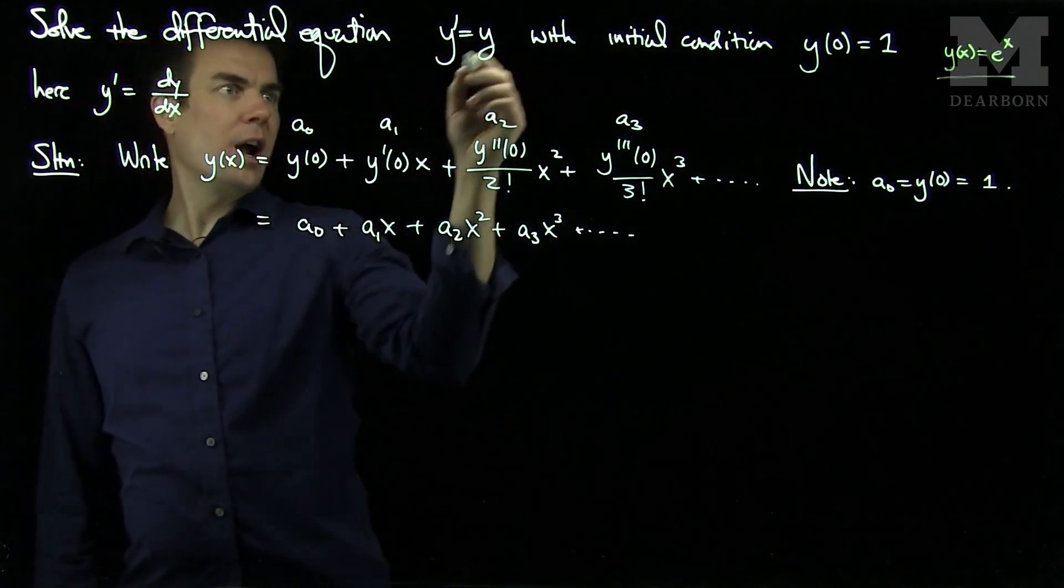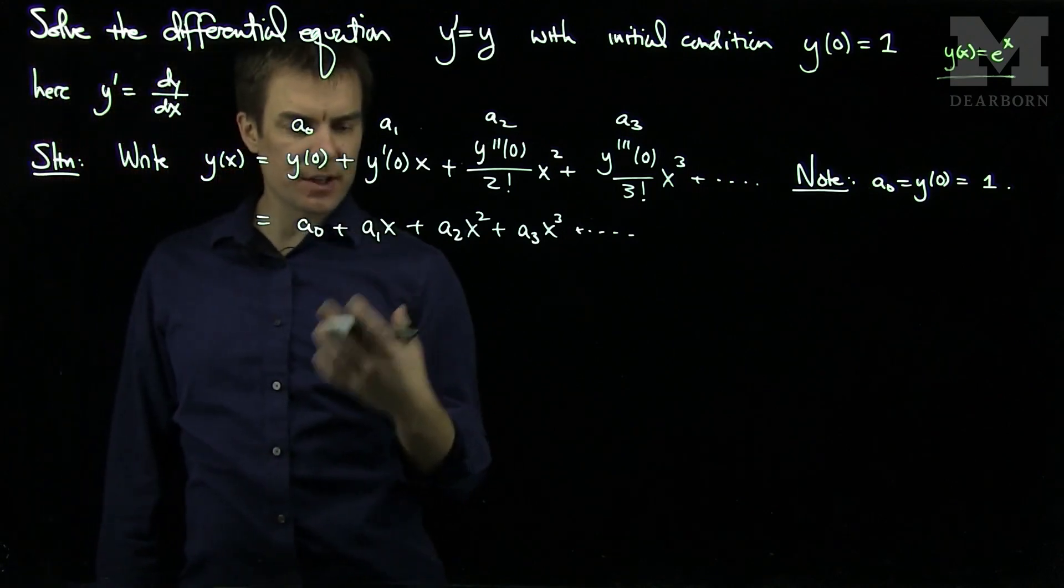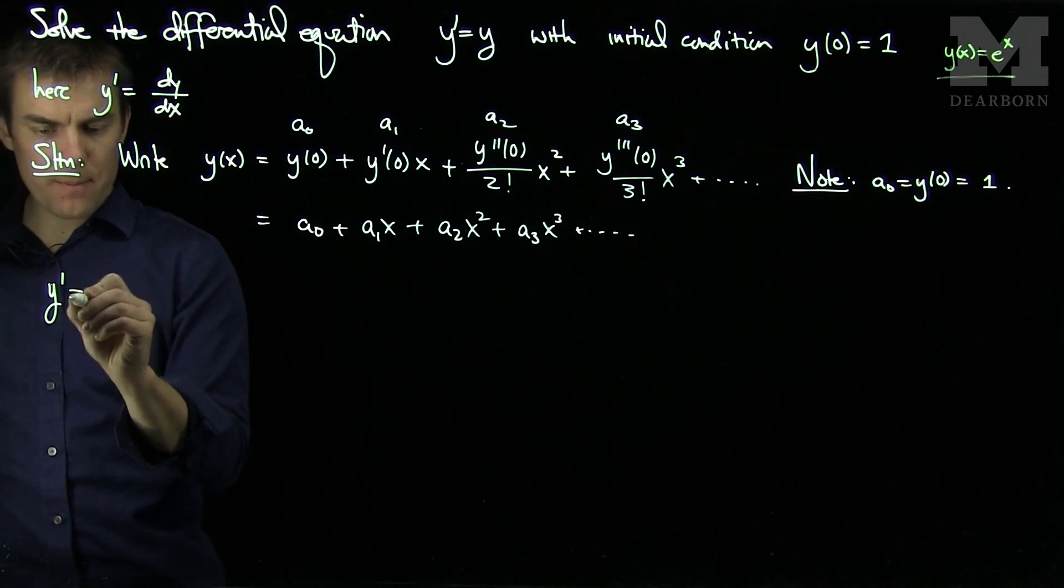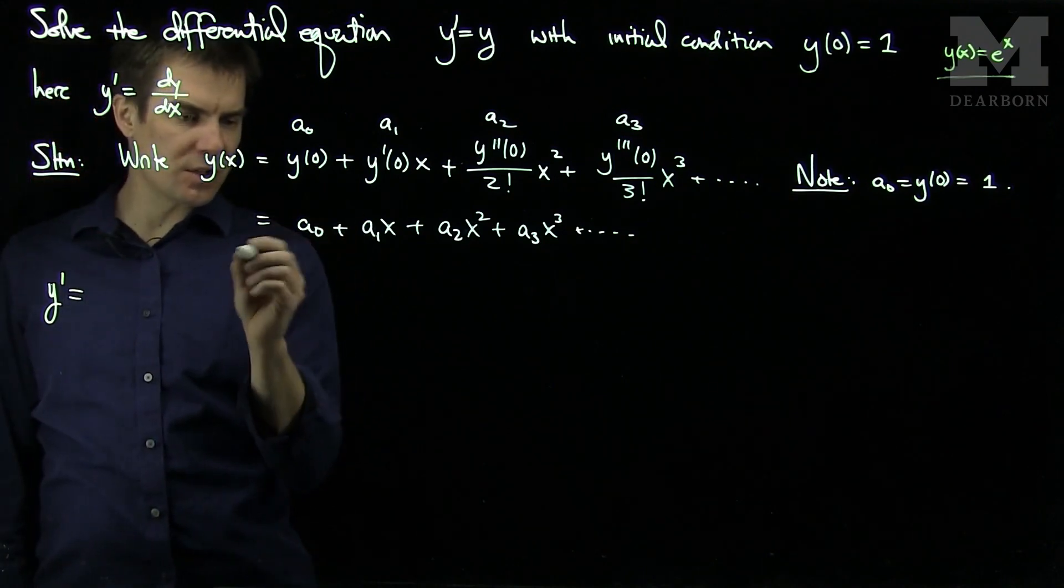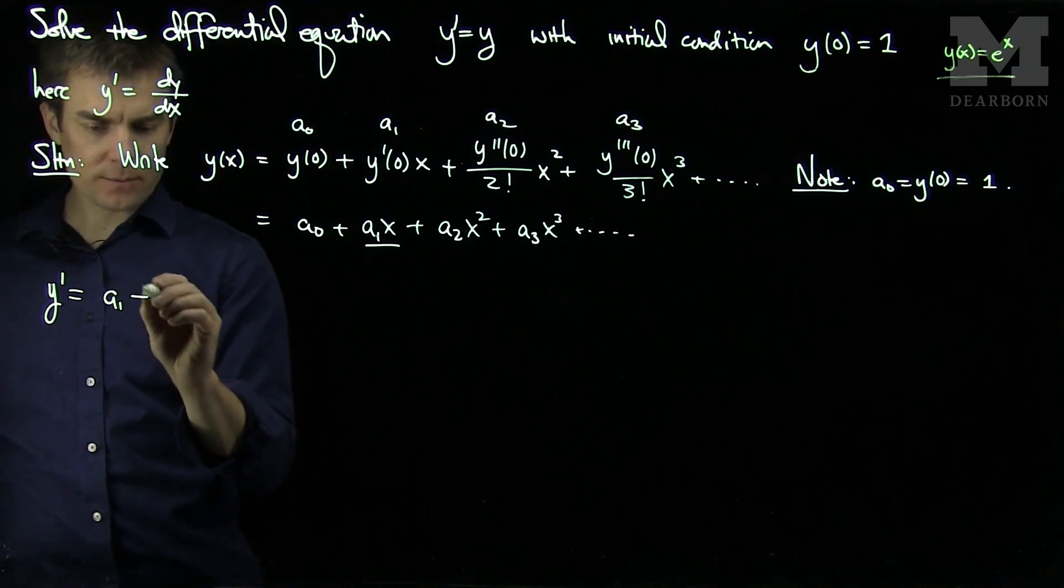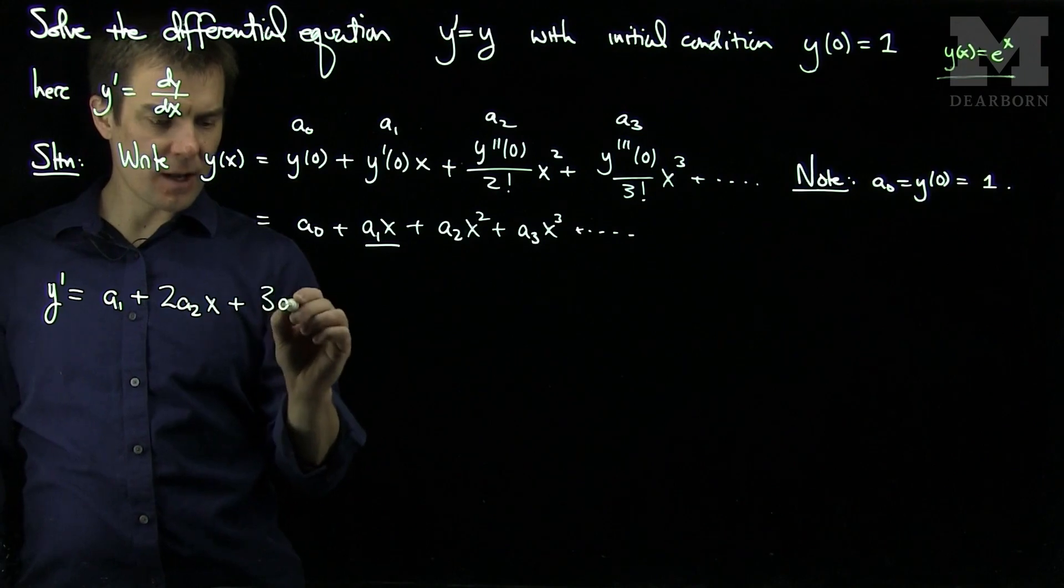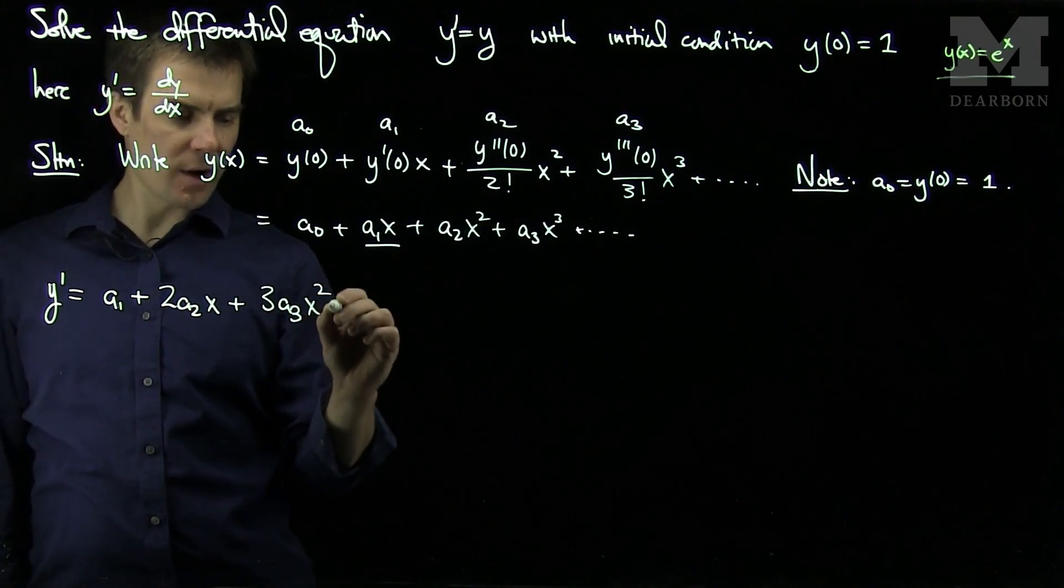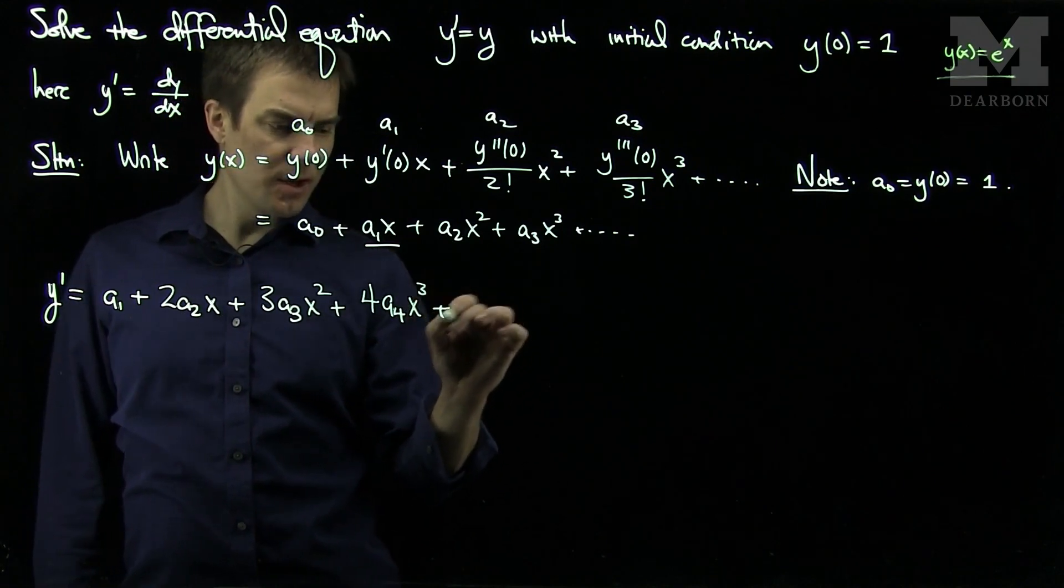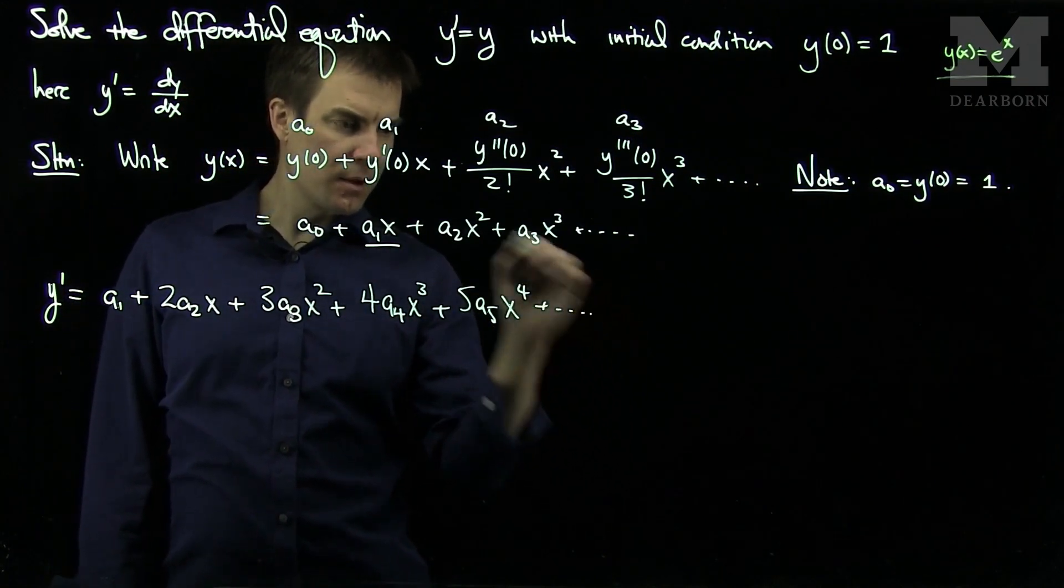So we know that y prime is equal to y, so let's do the derivative of this Taylor series. That's one of the advantages of Taylor series is that it's very easy to differentiate. So here y prime will be: the derivative of a0 is 0, the derivative of a1x will be a1, then I'll have 2 a2x, then 3 a3x squared, then 4 a4x cubed, then 5 a5x to the fourth, and so on.